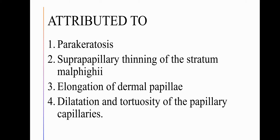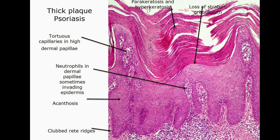These images show the Grittage test leading to elicitation of Auspitz sign. Auspitz sign in plaque psoriasis is attributed to the following histopathological features: namely parakeratosis, suprapapillary thinning of the Malpighian layer, elongation of the dermal papillae, and dilatation and tortuosity of the papillary capillaries. This image shows the histopathological features responsible for Auspitz sign as just described.